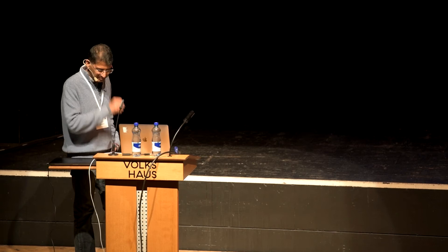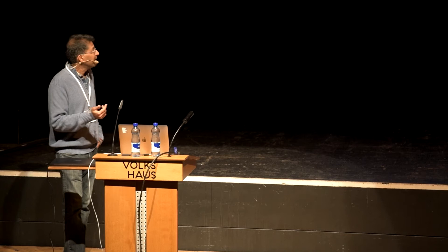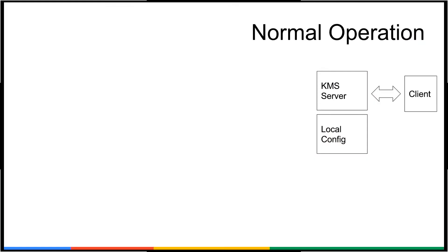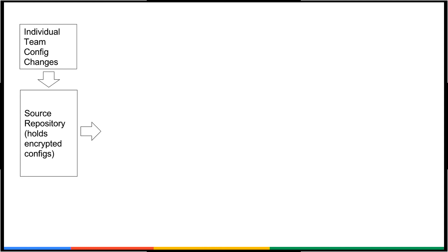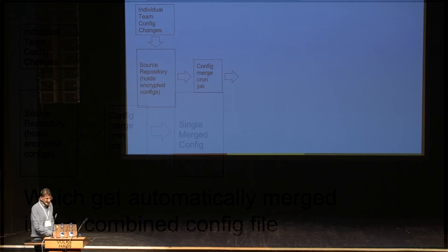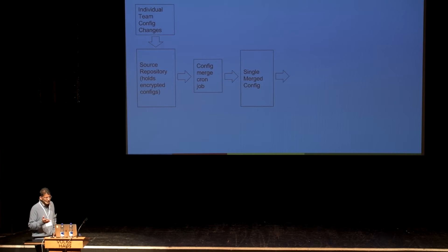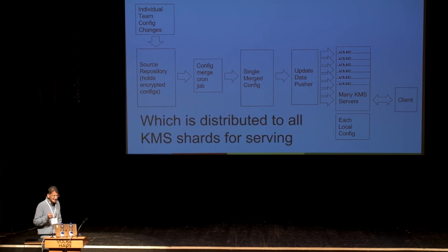In normal operation, clients access the key management server through an RPC mechanism, and the KMS serves up keys based on local config. Every team that uses the KMS maintains their own configurations in our version control system. These are packaged up, merged together, and sent out to all of our serving replicas worldwide. Since teams want to make changes for velocity, we update these multiple times an hour.